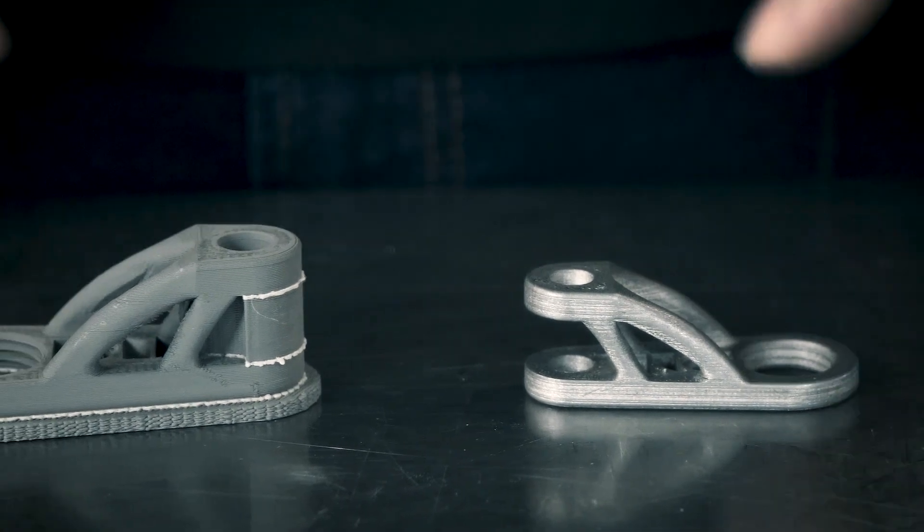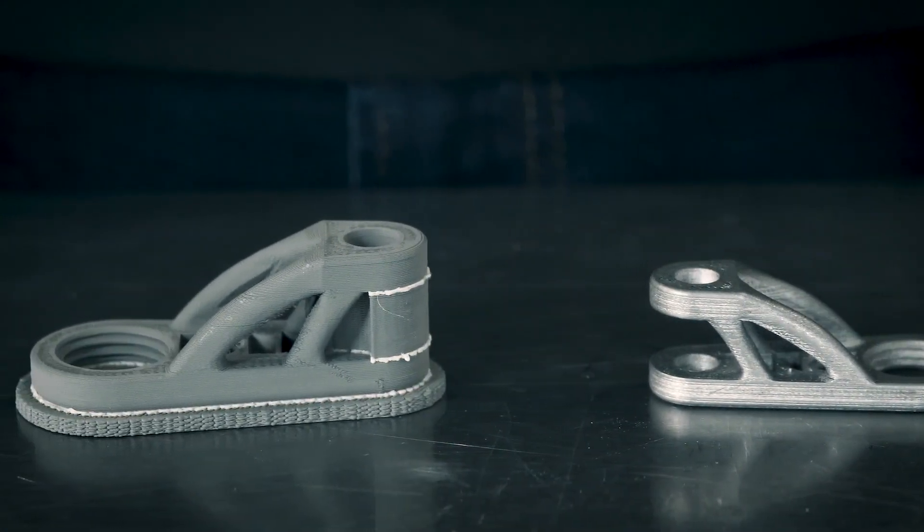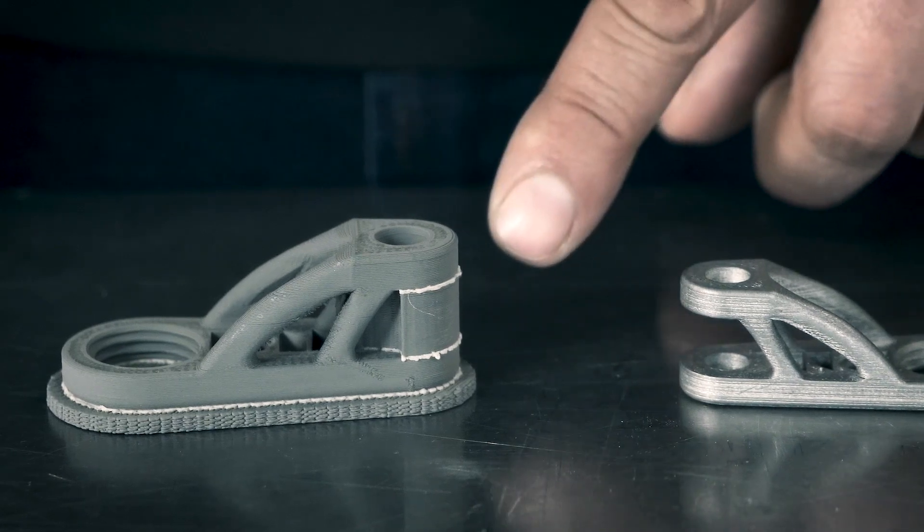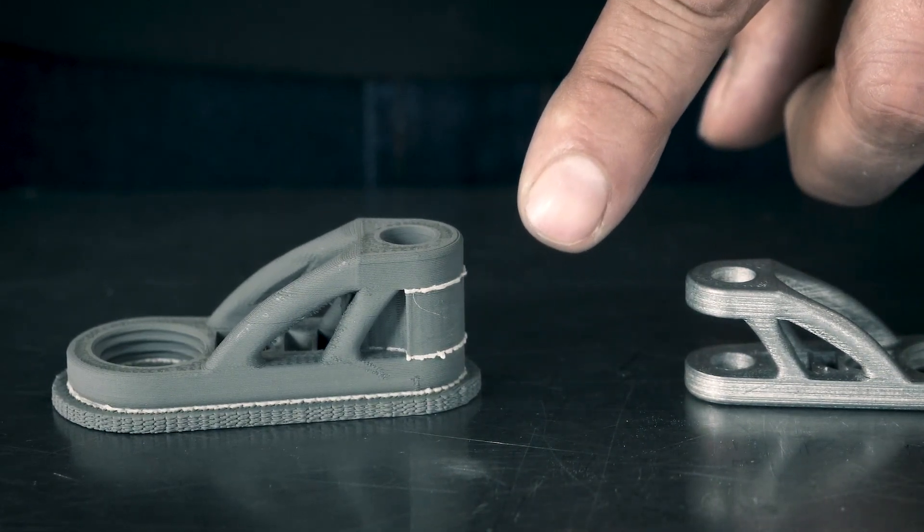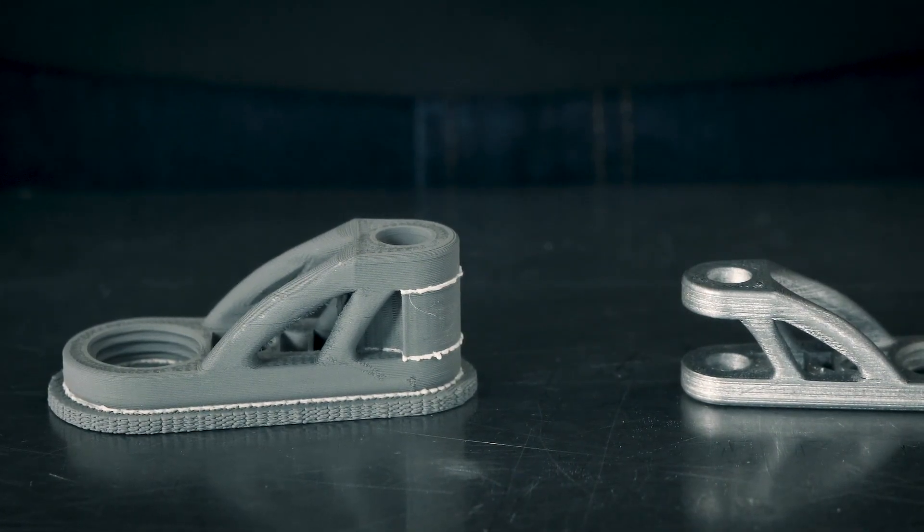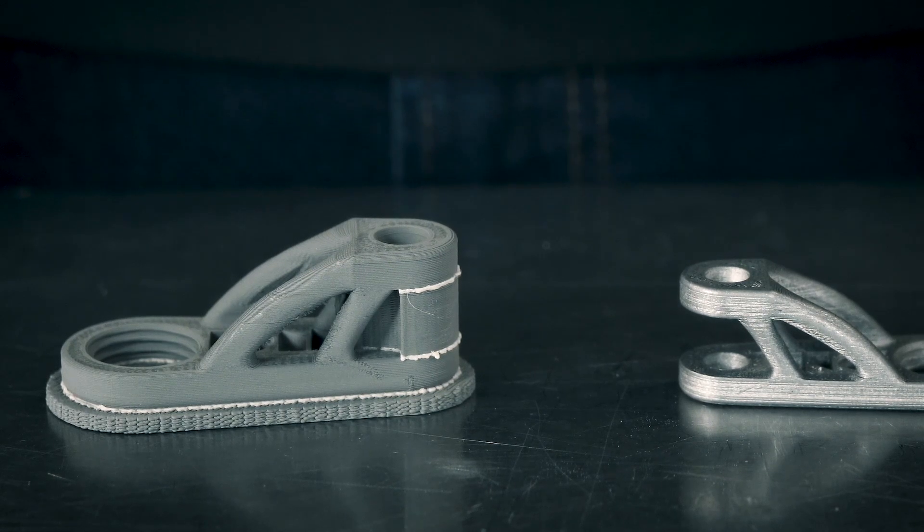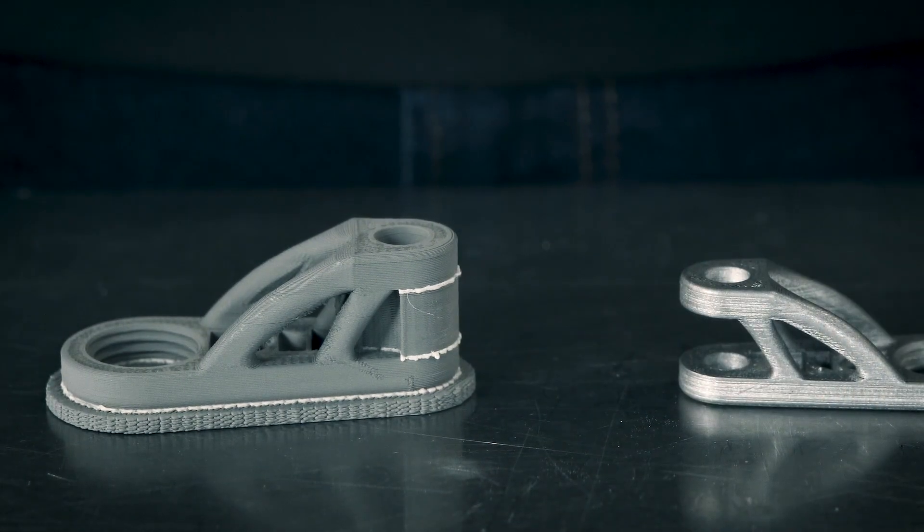If we look at the green part, we can see there's a support structure that was printed in place. If we look at it a little bit closer, we can see a white ceramic interface layer. This will turn to a powder or a sand during sintering and allow us to easily remove the support from the model.